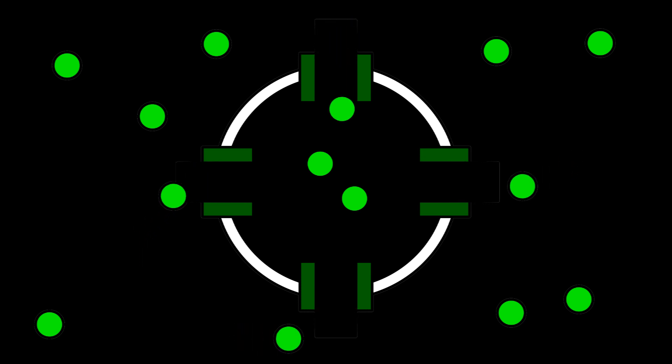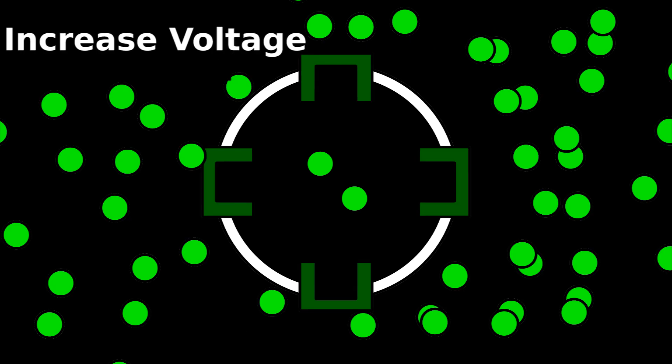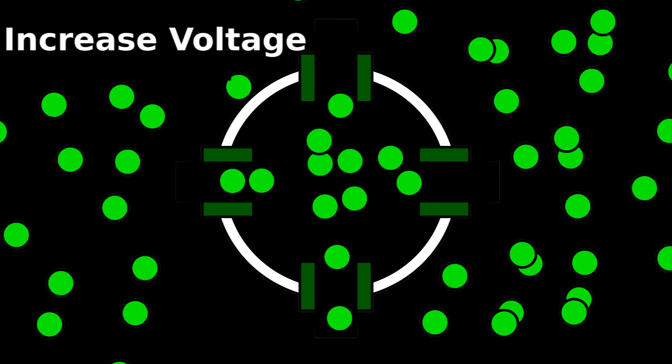When you open the channels, the sodium flows into the cell. If you increase the voltage or ion gradient, the ions will flow more quickly.